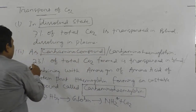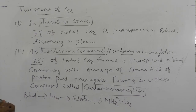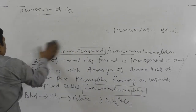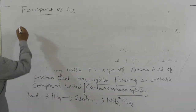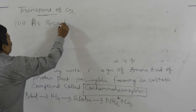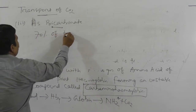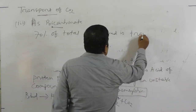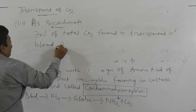So to summarize the three forms: 7 percent as dissolved state in plasma, 23 percent as carbaminohemoglobin, and the remaining 70 percent of total carbon dioxide formed is transported in blood as bicarbonate ion.